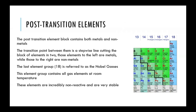The post-transition elements occur on the right-hand side of the transition metals. These elements are both metal and non-metal. The transition between them is a stepwise line cutting this block in half — the lower left are all metallic elements, and the upper right are all non-metal elements. Those that straddle this line are many times referred to as metalloids, which can have properties similar to either a metal or a non-metal.